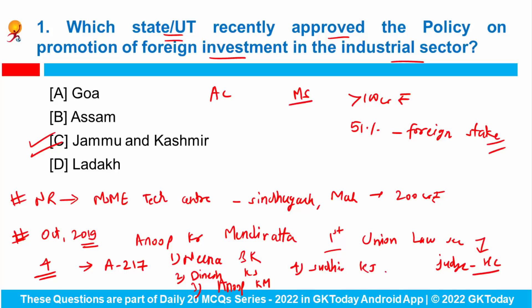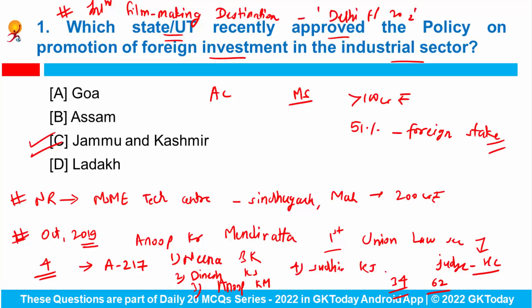The working strength of Delhi High Court will now increase to 34 against the sanctioned strength of 62 judges. Talking about Delhi, the Government of Delhi is all set to pitch Delhi as an international filmmaking destination by approving the Delhi Film Policy 2022 to enable inclusive growth through tourism. Delhi Government will provide subsidies of up to 3 crore rupees for films made in Delhi, and a Delhi Film Card of value 1 lakh rupees will also be introduced for production agencies and filmmakers.